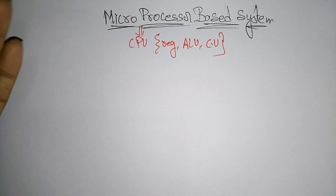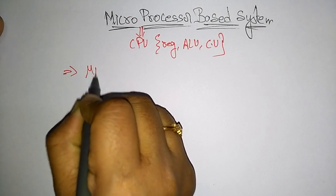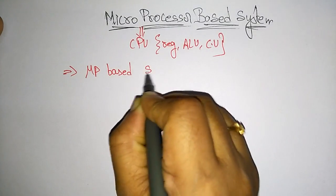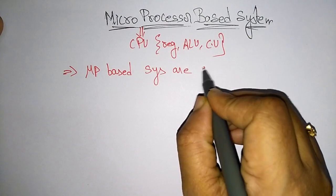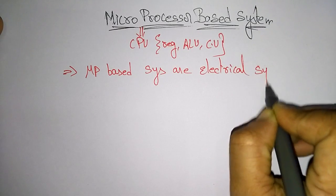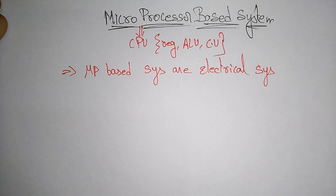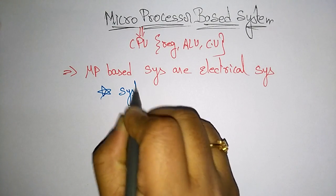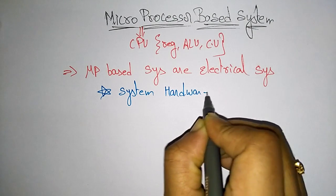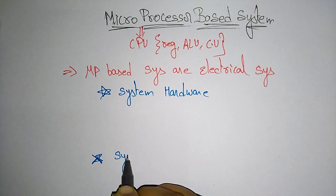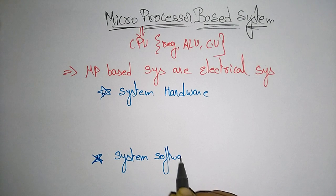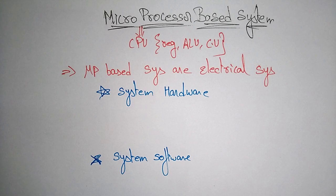Just like a computer, a microprocessor-based system — which you can also call an electrical system — is any system that consists of a microprocessor. These electrical systems are divided into two types: system hardware and system software.